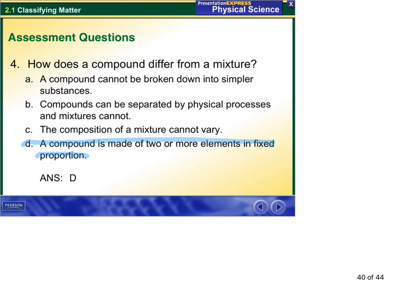Mixtures can be separated by physical properties and compounds can't. A compound cannot be broken down into simpler substances. It can be. It has to use chemical methods to do it, but it can always be broken down into simpler substances, such as its elements.